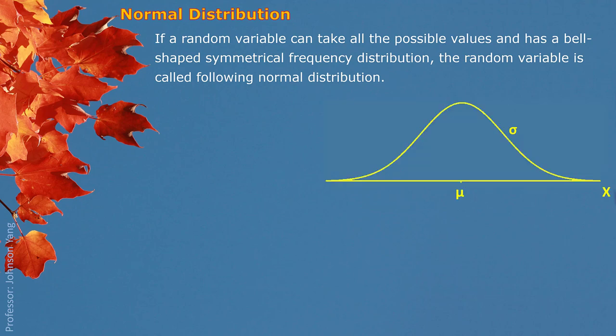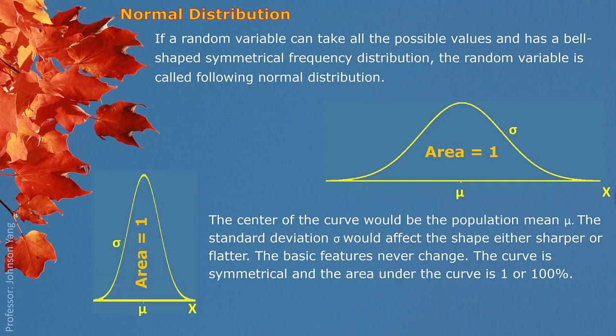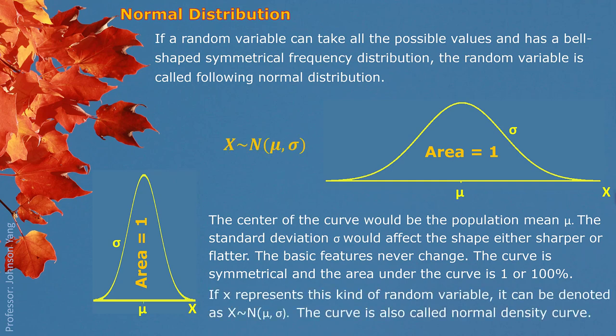Here is what the shape looks like — the outline or polygon of the frequency distribution, a typical bell-shaped symmetrical curve. The center of the curve is the population mean, mu. The standard deviation sigma affects the shape, making it either sharper and skinnier, or flatter. The basic features never change: the curve is symmetrical, the area under the curve is 1 or 100%, and the random variable is denoted as N(mu, sigma).